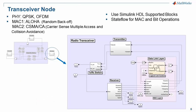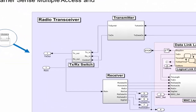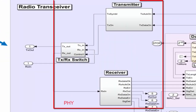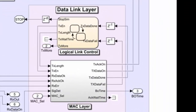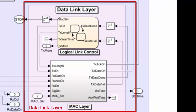Here is the top level of the radio transceiver node. The transmitter, the TX-RX switch, and the receiver form the physical layer. The MAC layer and the logical link control function compose the data link layer. Since the same radio band is used for TX and RX, the MAC functions employed here are CSMA/CA and ALOHA, which is also called random backoff.